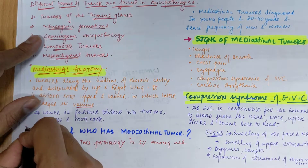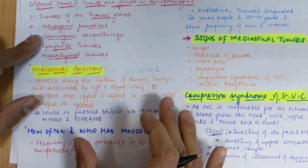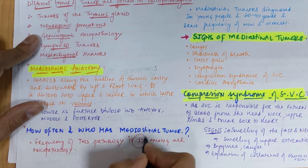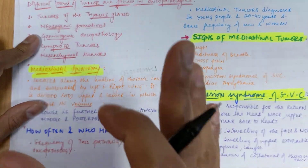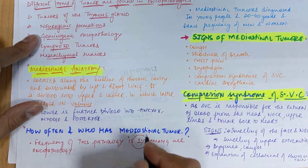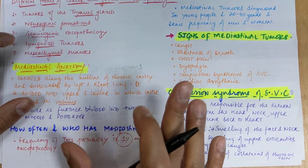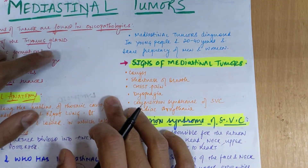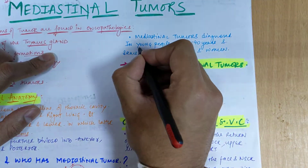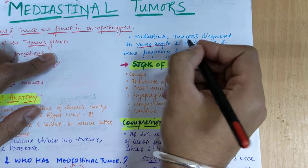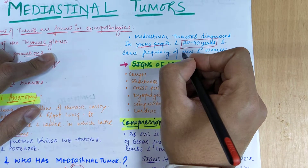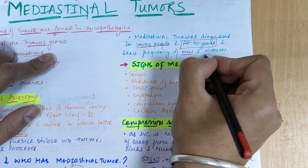The frequency of mediastinal tumors is around one percent of all oncopathology. This tumor is most common in young and middle-aged people, around the age of 20 to 40 years, and the frequency is the same in men and women with no sex differentiation.